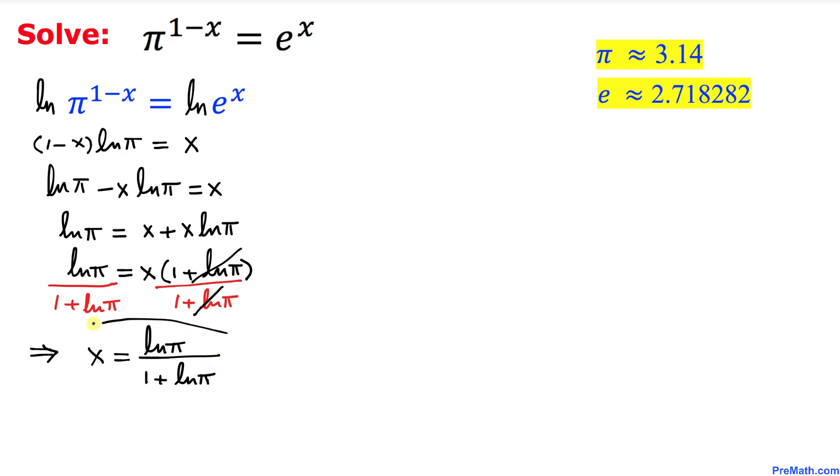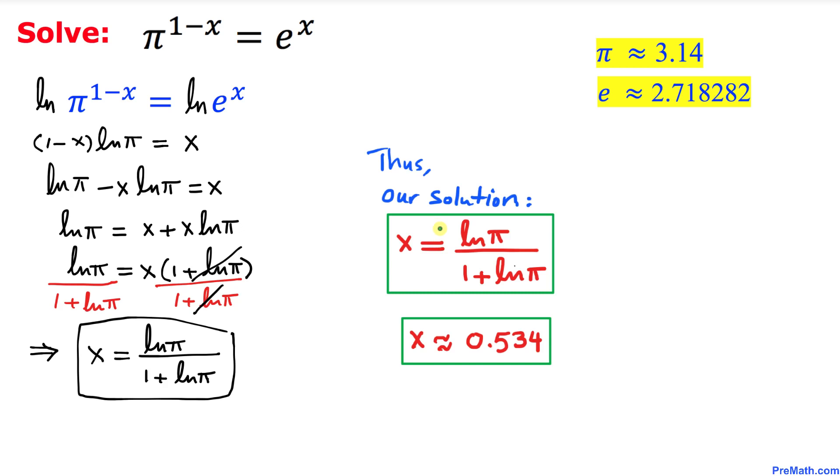And this is our solution. Thus our solution turns out to be x = ln(π)/(1 + ln(π)). And if we replace π by 3.14 our x value is approximately equal to 0.534.